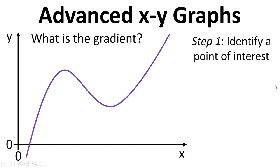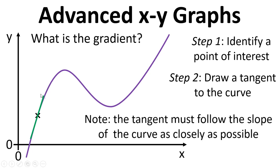So what we have to do first of all is identify a point of interest on the graph, we then need to draw a tangent to the curve. So this is a line that we draw in, and this line must follow the slope of the curve as closely as possible at the point that we're interested in.